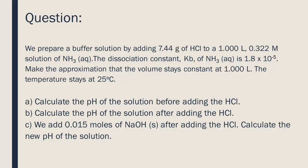Buffer solutions. We prepare a buffer solution by adding 7.44 grams of HCl to a 1 liter 0.322 molar solution of NH3. The dissociation constant, Kb, of NH3 is 1.8 times 10 to the negative 5. Make the approximation that the volume stays constant at 1 liter. The temperature stays at 25 degrees Celsius.